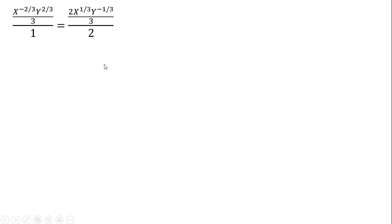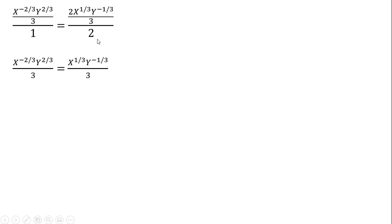Rewriting that last condition: dividing by 1 on the left-hand side just leaves that expression as-is. On the right-hand side, there's a 2 in the numerator and a 2 in the denominator, so they cancel. We also have a 3 on each side, so multiplying through by 3 cancels the 3s as well.